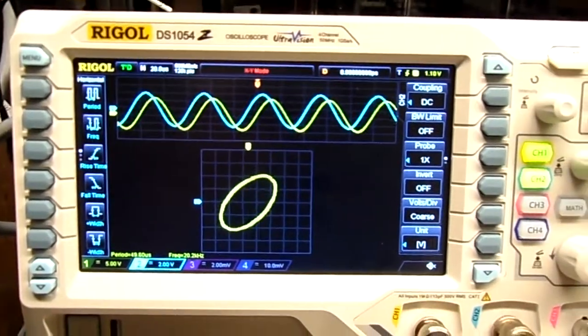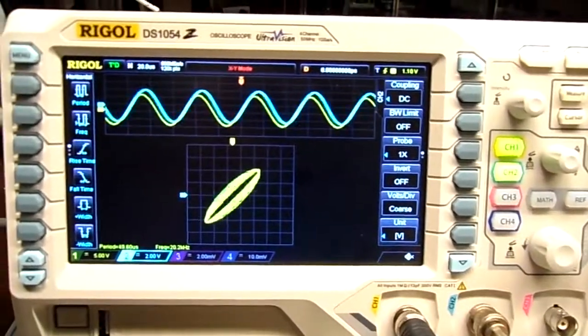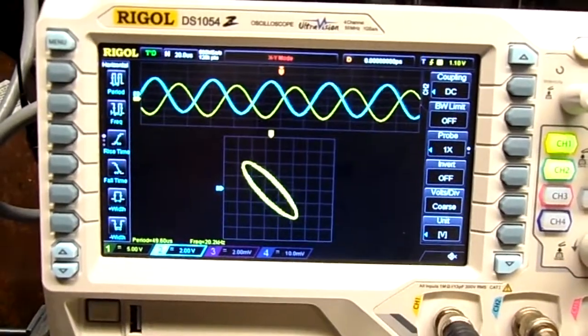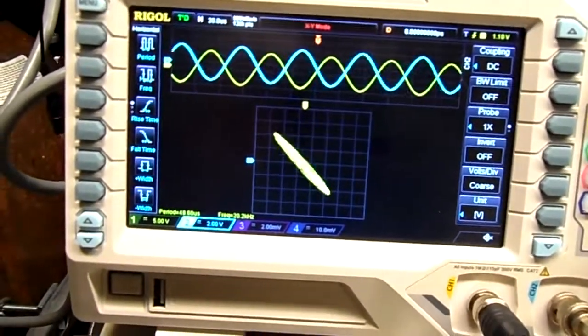So if they were perfectly in sync, if the frequencies were perfectly in sync, the shape would be stable. The area would be stable.